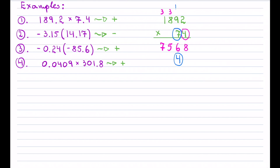7 times 9 is 63 plus the 1 is 64, carry the 6; 7 times 8 is 56 plus the 6 is 62, carry the 6; and 7 times 1 plus the 6 is 13. If your multiplication tables are a little rusty, just be patient and slowly go through the multiplications one by one — the key is just not to rush.